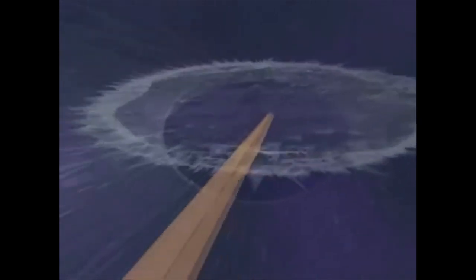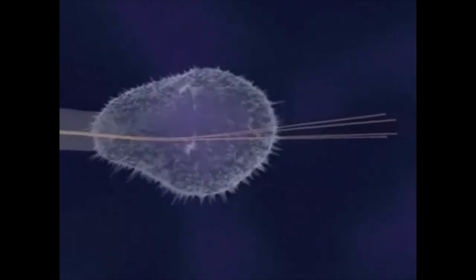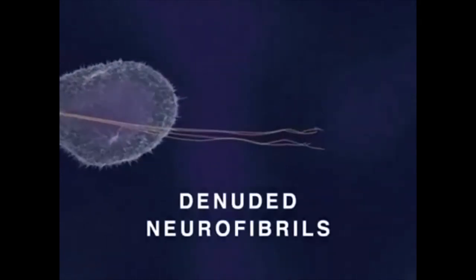Ultimately, both the developing neurite and its growth cone collapse, and some denuded neurofibrils form aggregates or tangles as depicted here.